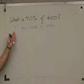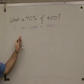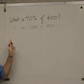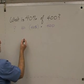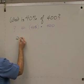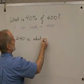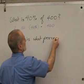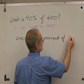So we've got unknown equals 40% times 400. Well, how about just multiply those three things together and you're done. Don't have to think about PBR. What if we said 240 is what percent of 600?